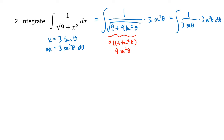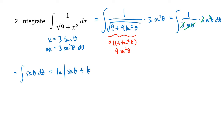We get some simplification. The secant on the bottom divides out with one copy of secant on the top, and the 3 divides out with the 3. So we end up with just the integral of secant of theta d theta. That's a formula we should know: the antiderivative of secant theta is the natural log of the absolute value of secant theta plus tan theta, plus c.